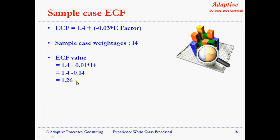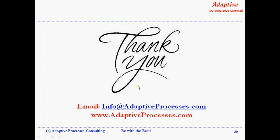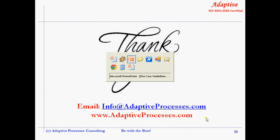The adjusted use case points (UCP) are calculated as follows: UCP equals UUCP multiplied by TCF multiplied by ECF. For the sample case, UCP is 87. Thank you for watching this video tutorial on UCP estimation from Adaptive Processes. For any further help or clarification, please feel free to contact us at info@AdaptiveProcesses.com.